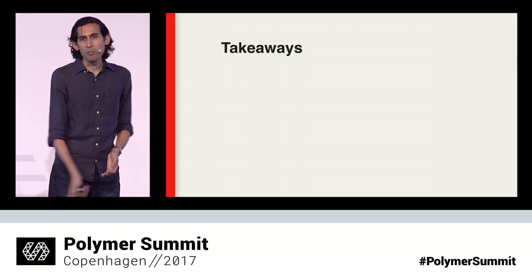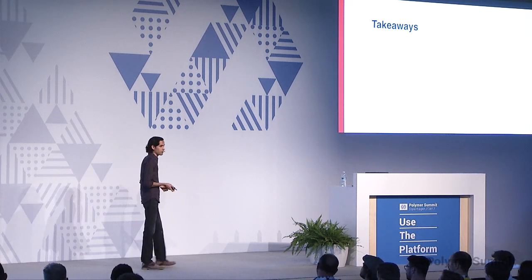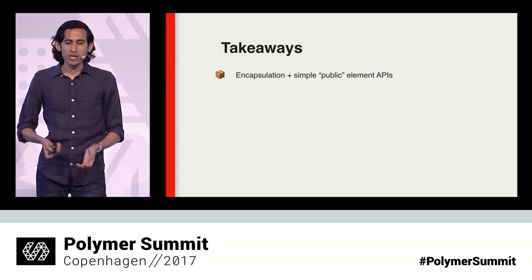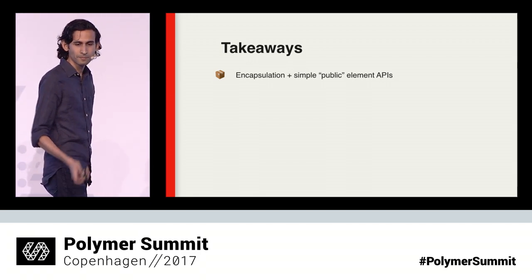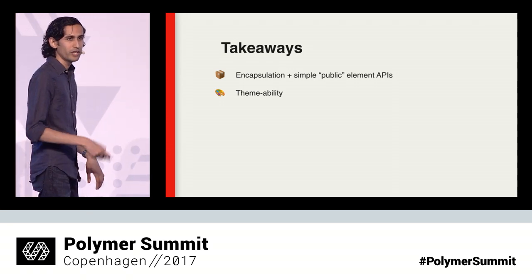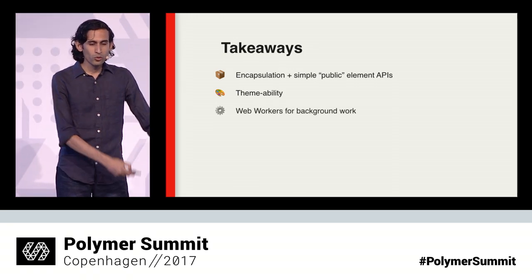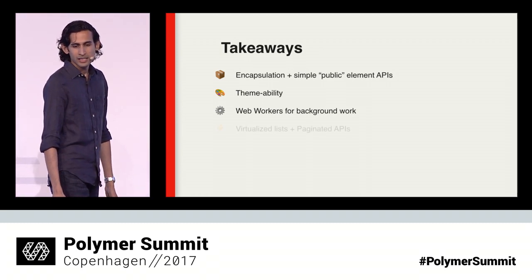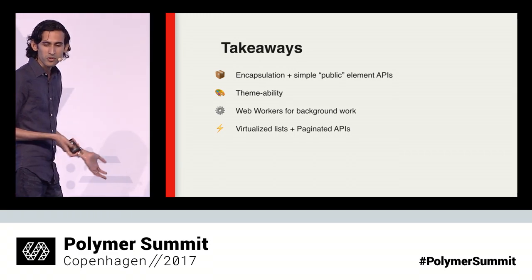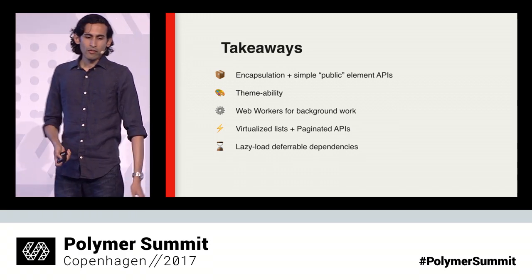Those were some of the many apps we've been busy building using Polymer within Netflix. To recap, some interesting takeaways: Custom elements and Shadow DOM give us a great encapsulation model, allowing us to build complex components with simple public APIs shielded from global styles. Themeability can be achieved using CSS custom properties and the add-apply mixin. Web workers are a great way to do background work off the main UI thread. Virtualized lists like iron-list combined with paginated APIs give us fast, fluid performance even with huge amounts of data. And a component-based architecture allows us to lazy load only the dependencies needed for requested views.